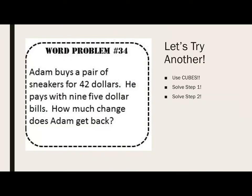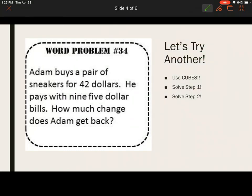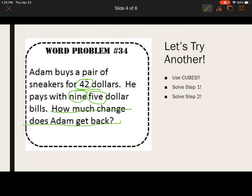Let's try another. Adam buys a pair of sneakers for $42. He pays with 9 five-dollar bills. How much change does Adam get back? Let's use CUBES. I see 42, I see 9, I see 5. The question is: how much change does Adam get back? The key words I see are 'back' and '$5 bills.'